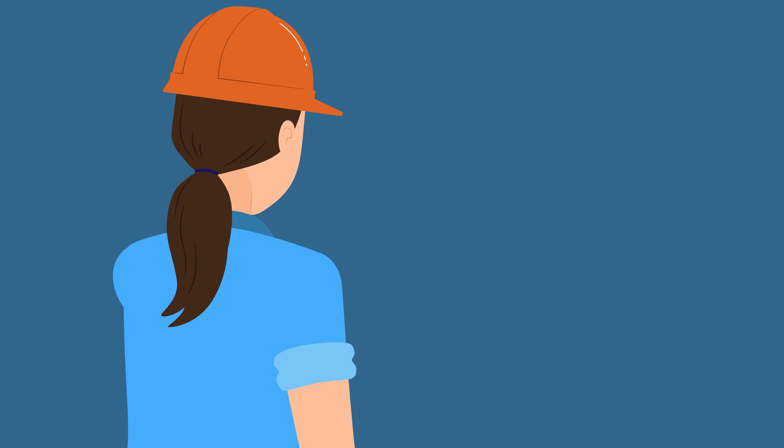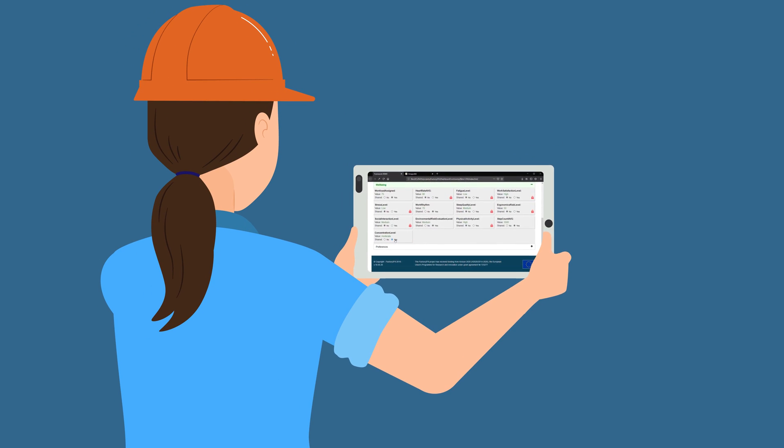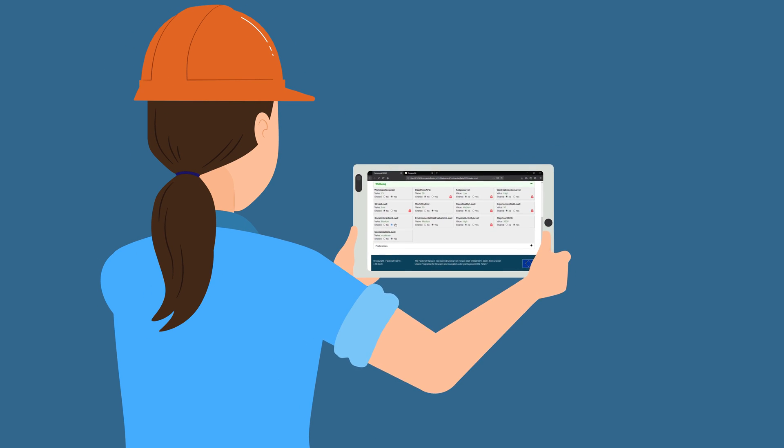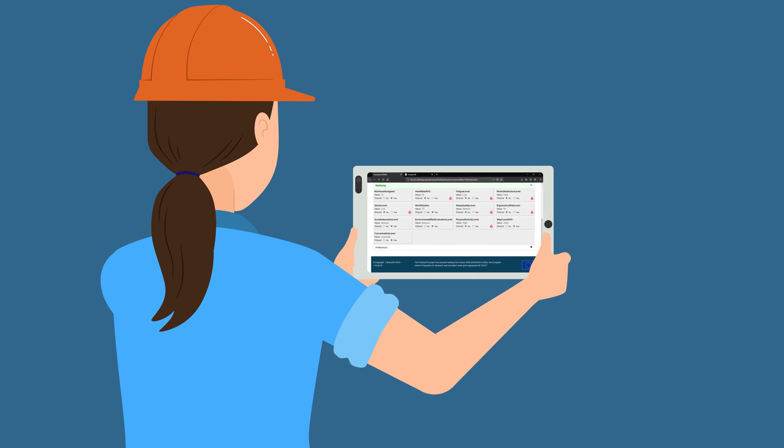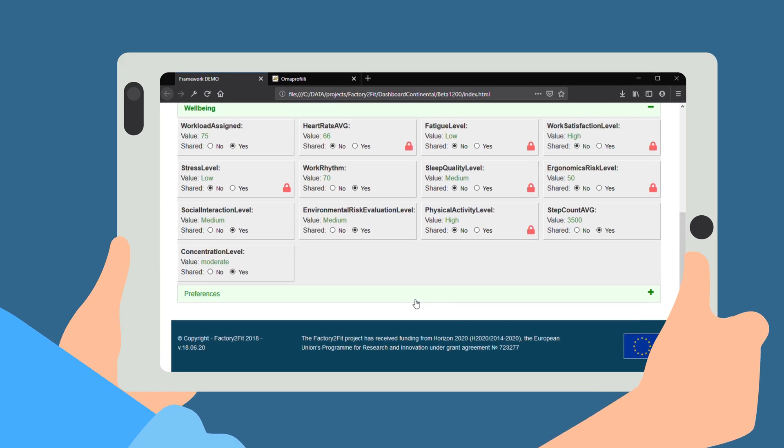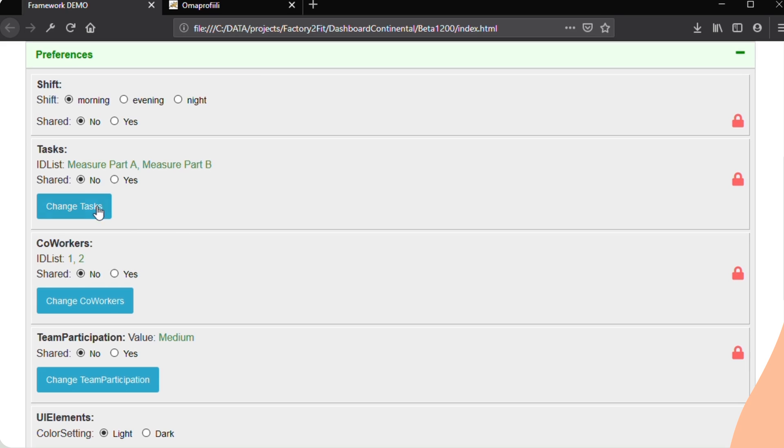The decision support system gives workers more control over their tasks. It uses AI to optimize task assignment to workers and machines. Workers' skills, capabilities, and preferences are all taken into account, giving workers a choice in the type of work they want to do.